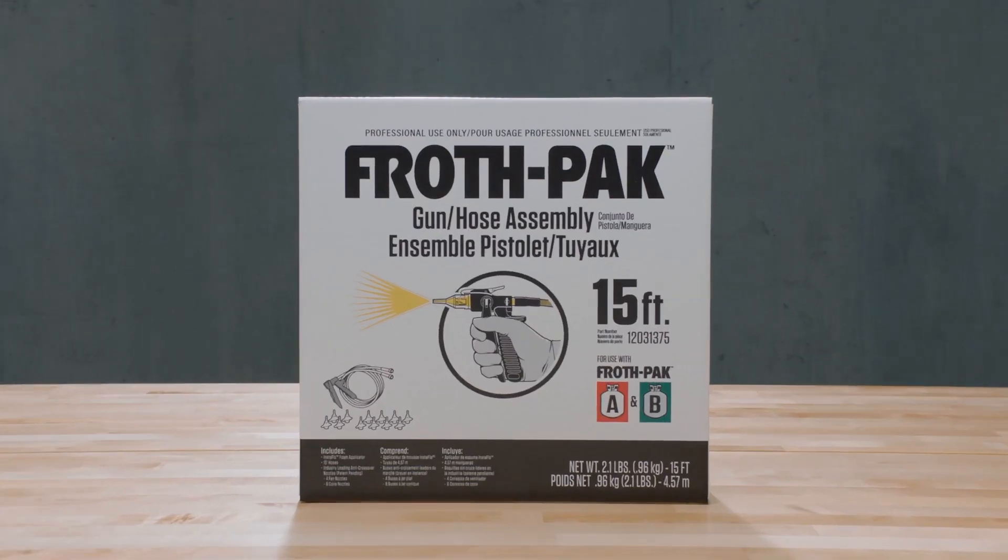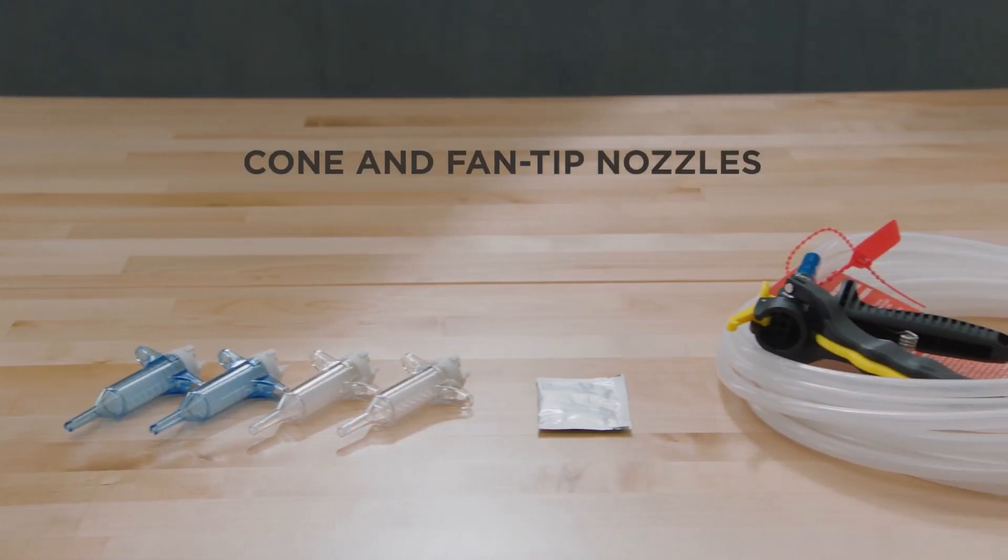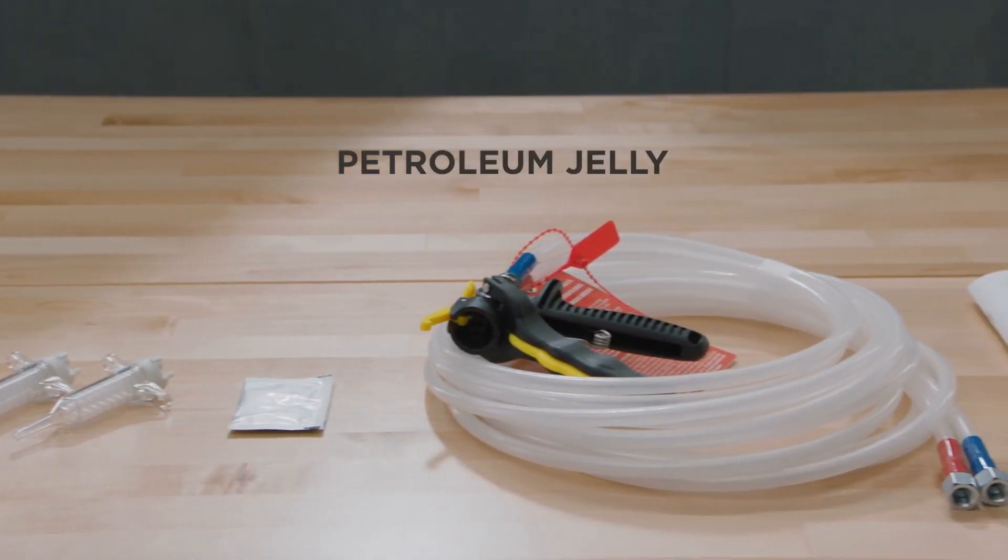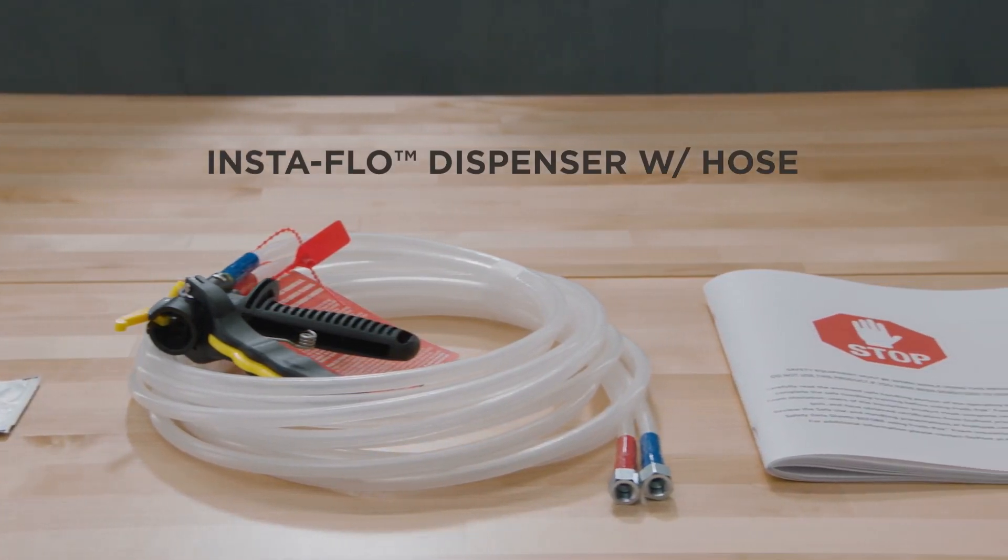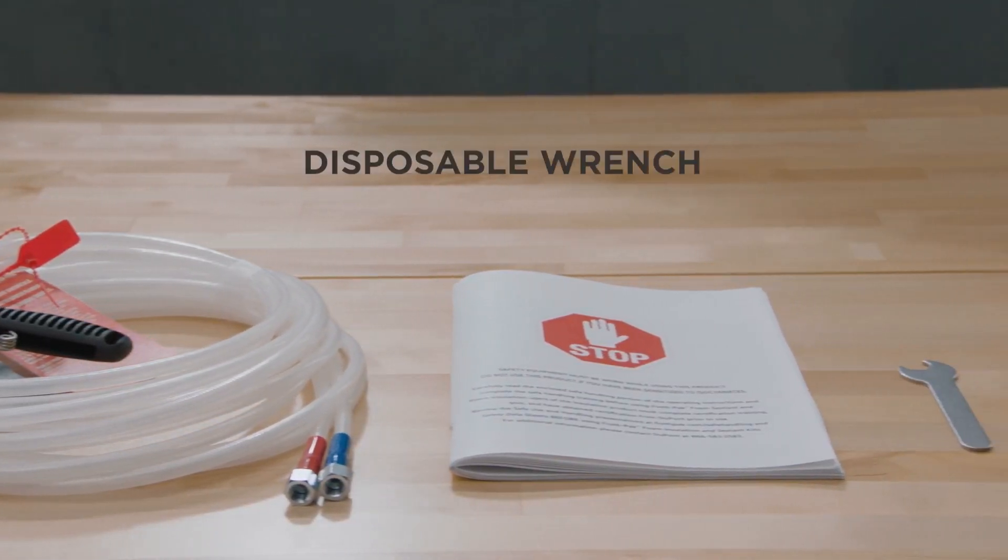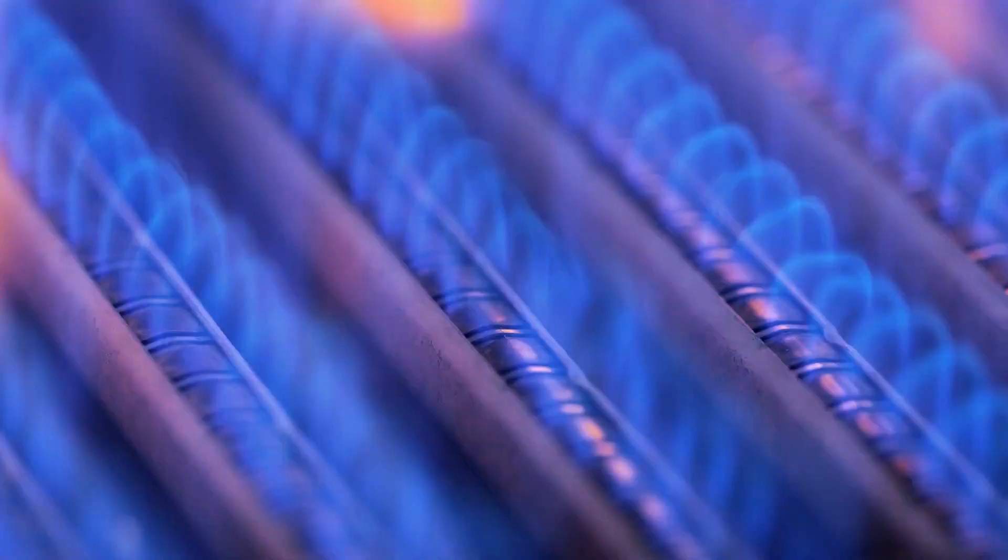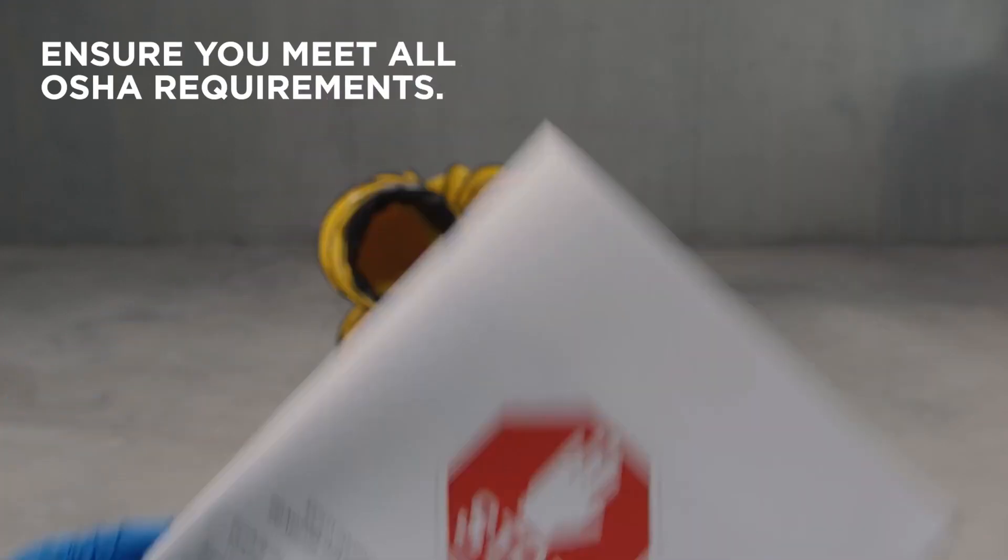The hose assembly should include cone nozzles, fan tip nozzles, packet of petroleum jelly, InstaFlo dispenser with hose, instructional manual, and a disposable wrench. First, make sure all flame sources are extinguished, then prep the area and double-check the manual.